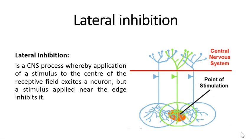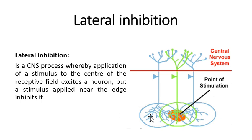The definition of lateral inhibition is: it is a CNS process whereby application of a stimulus to the center of a receptive field excites a neuron, but the same stimulus applied near the edge inhibits it. As you can see in the image, the brown area is where we have given a stimulus — it excites one connected neuron, but also stimulates nearby neurons. Lateral inhibition is the inhibition of these surrounding neurons so that we can recognize precisely which area the stimulus is applied to.